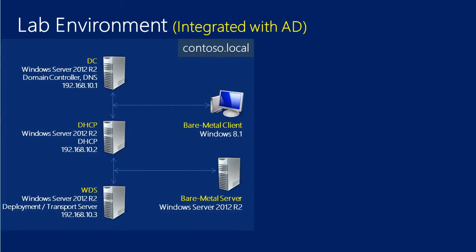Now the lab environment we have is pretty simple. We have a domain controller DC for the contoso.local domain, which is also a DNS server. We have a DHCP server, and we have a WDS server where we are going to install the WDS role with Deployment and Transport service roles. All our servers are joined to the Active Directory domain and all are running Windows Server 2012 R2. We are going to do a network-based bare metal installation of Windows 8.1 on one client and Windows Server 2012 R2 on another.